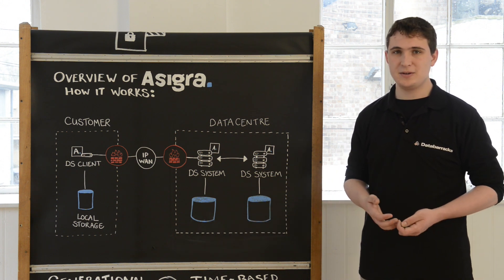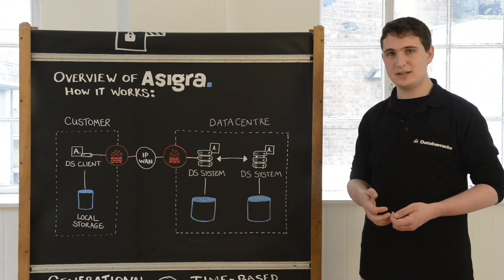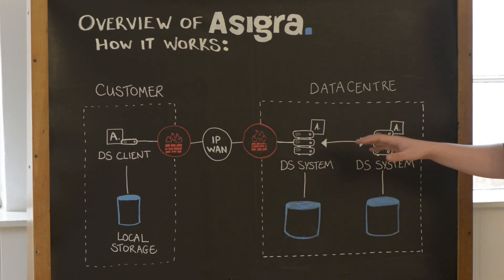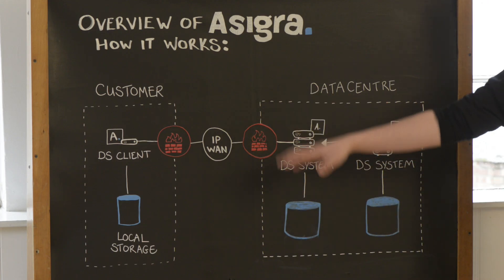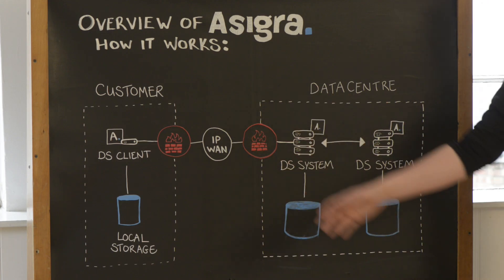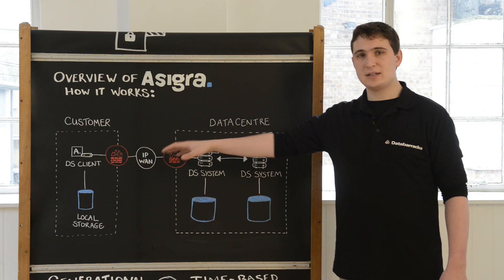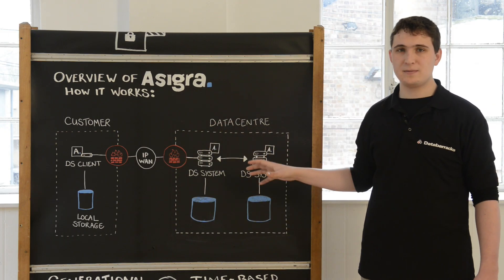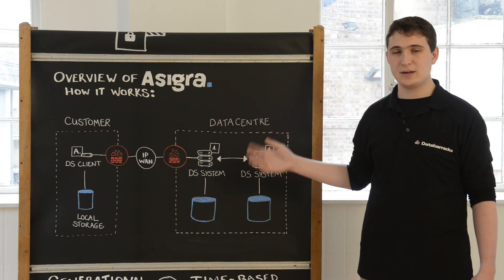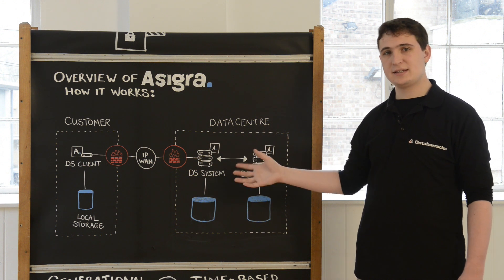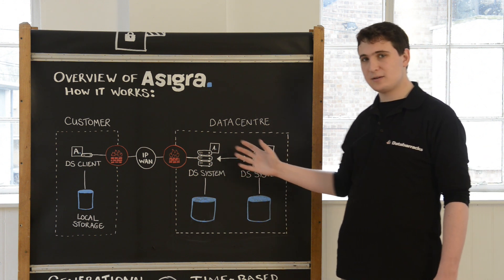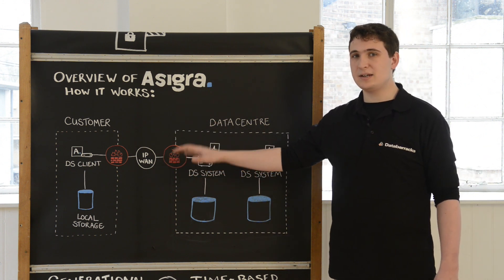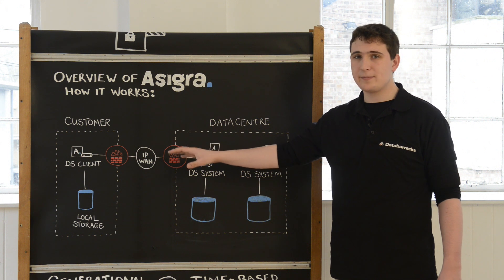The second option available is the ability to restore files from the DS system via the DS client. The DS client sends a request to the DS system to collect certain files that you have requested for restore. The DS system then sends those files back across the WAN connection in an encrypted and compressed format.